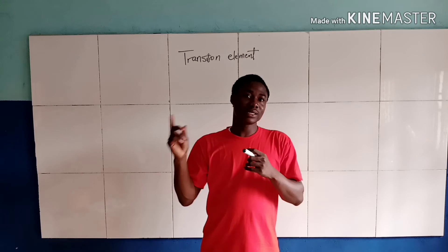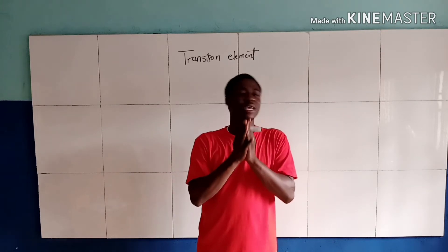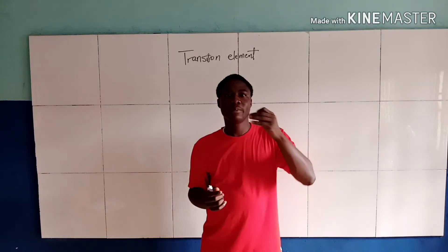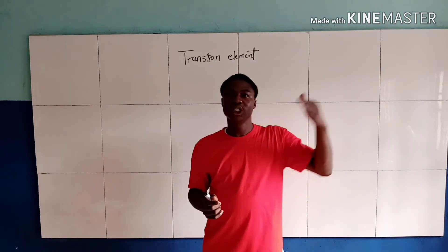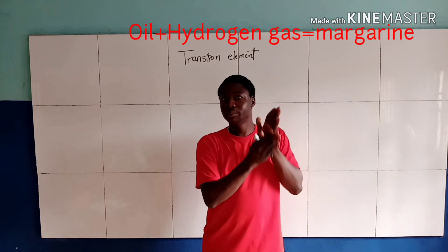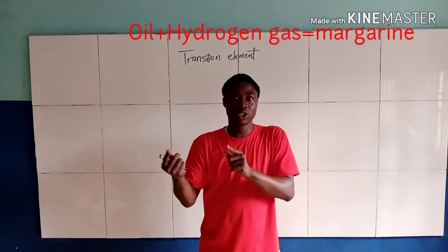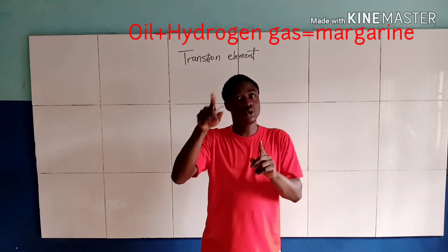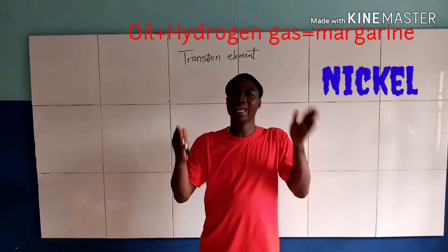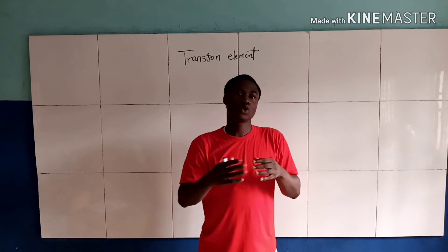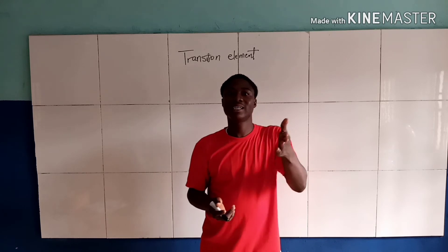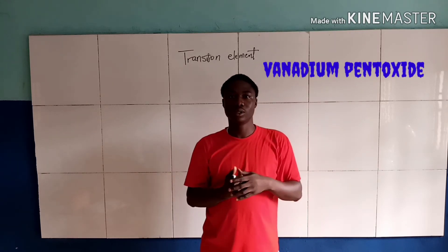Transition elements have the ability to act as catalysts. Talking about the hydrogenation of oil — hydrogenation of oil is whereby oil, which is precisely the propane 1-2-3 triol, reacts with hydrogen. The catalyst being used there is called nickel, to form margarine. Other examples are during the contact process, where vanadium pentoxide is used.